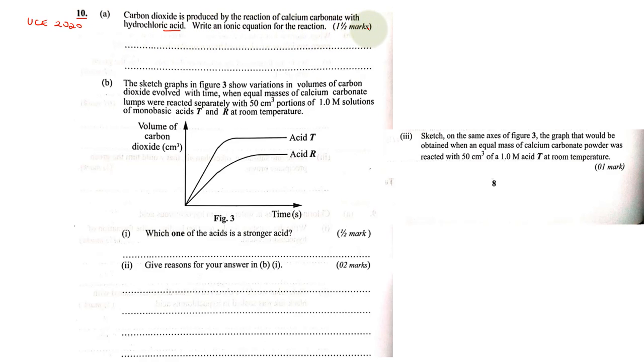For you to come up with an ionic equation, we need to first know the molecular equation. Remember, ionic equations must contain ions. So we must first come up with the molecular equation, but if you know it you can write it instantly.